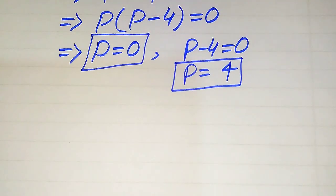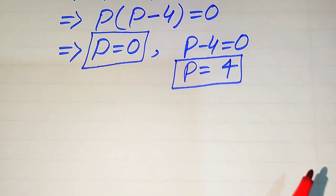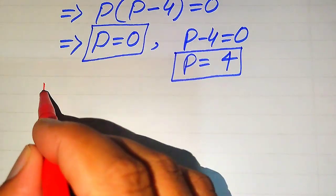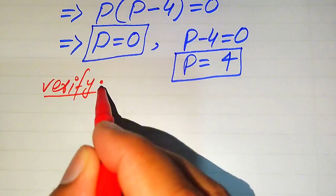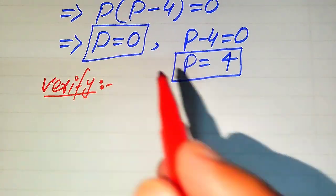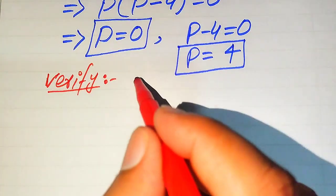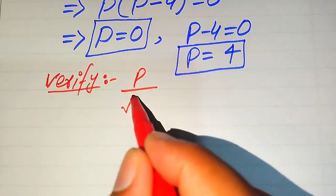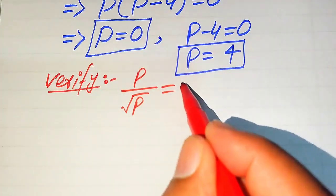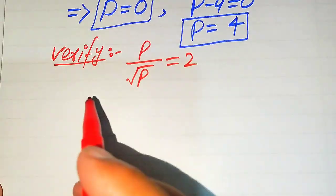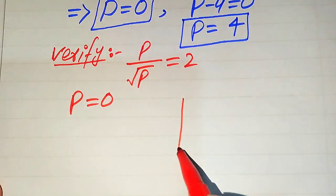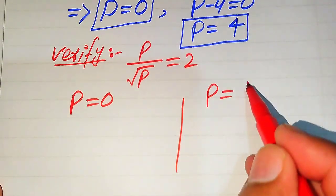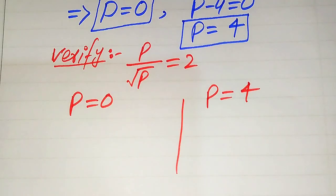In the next step we verify whether both of these roots are solutions or extraneous roots. We copy down the given equation: p divided by square root of p equals 2. On one side we verify p equals 0 and on the other side we verify p equals 4.